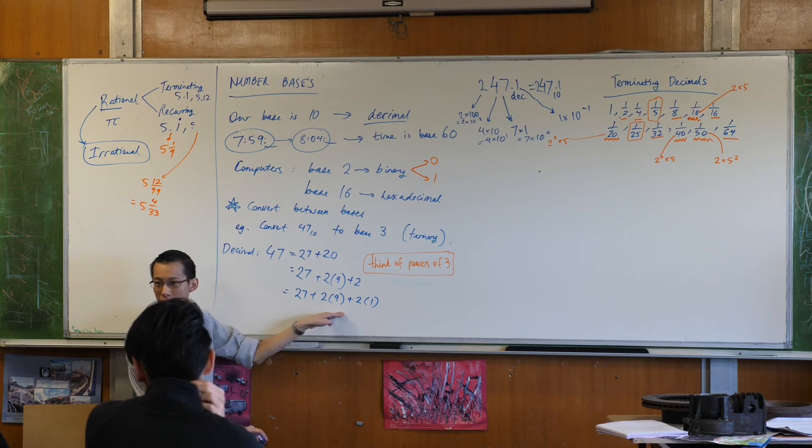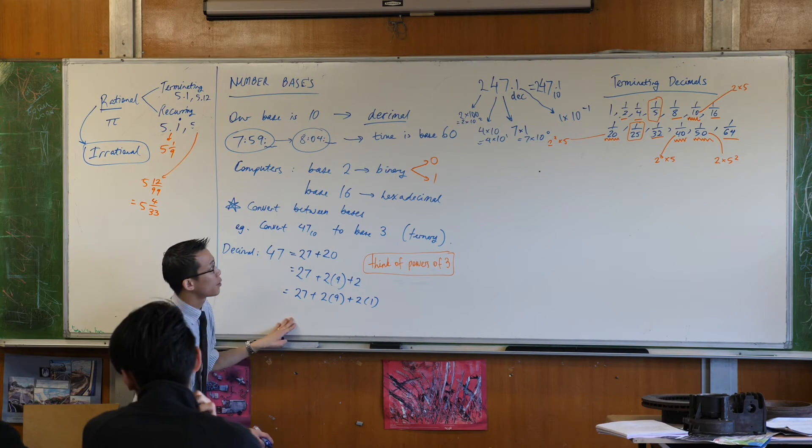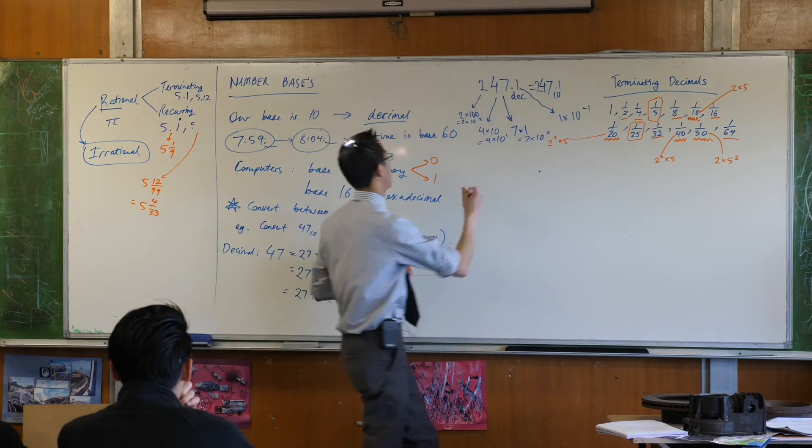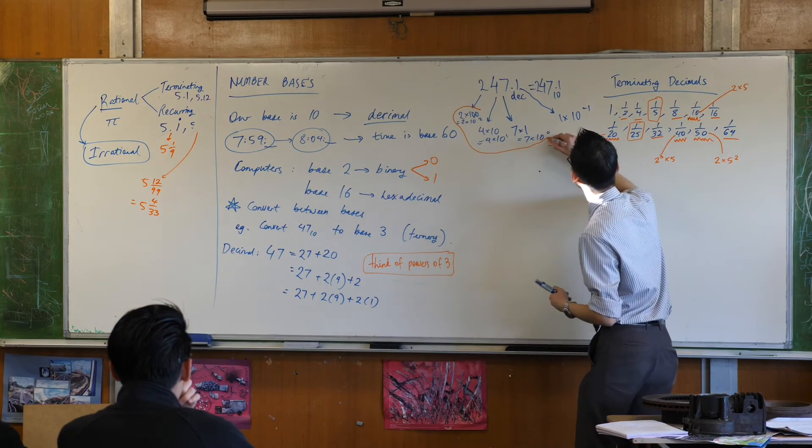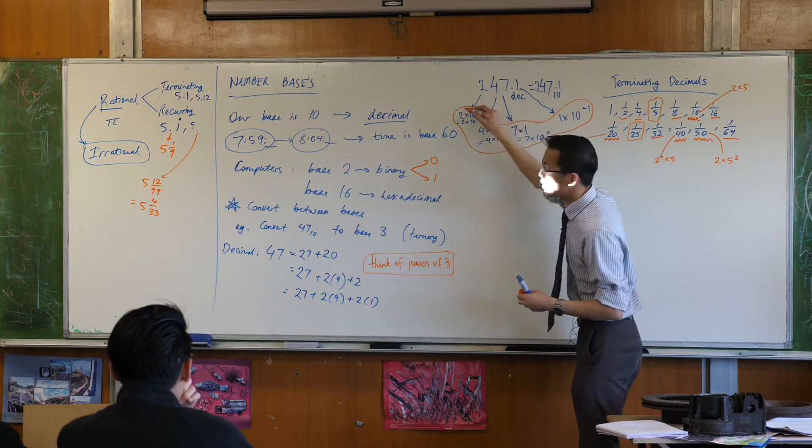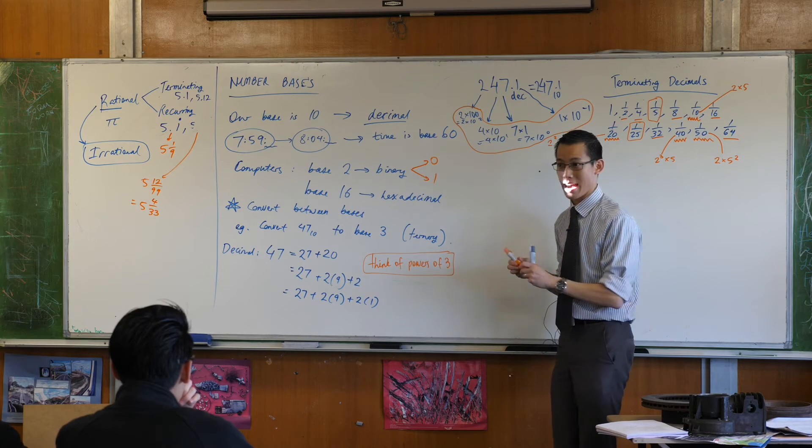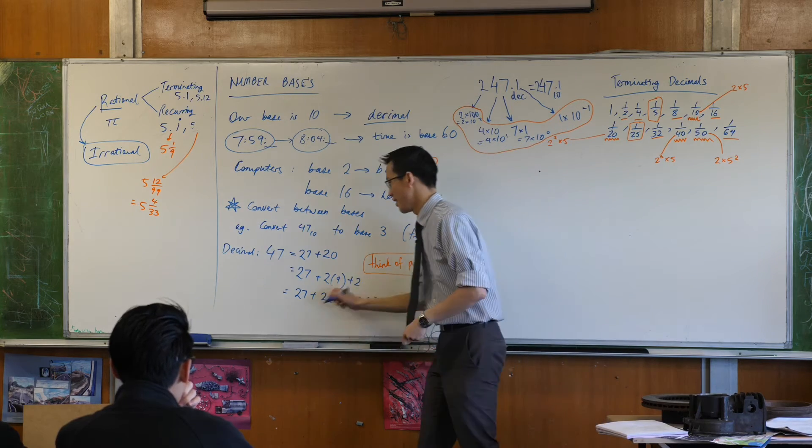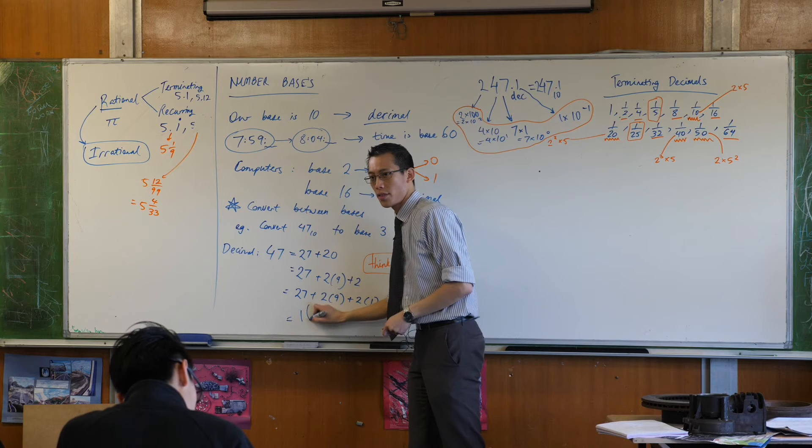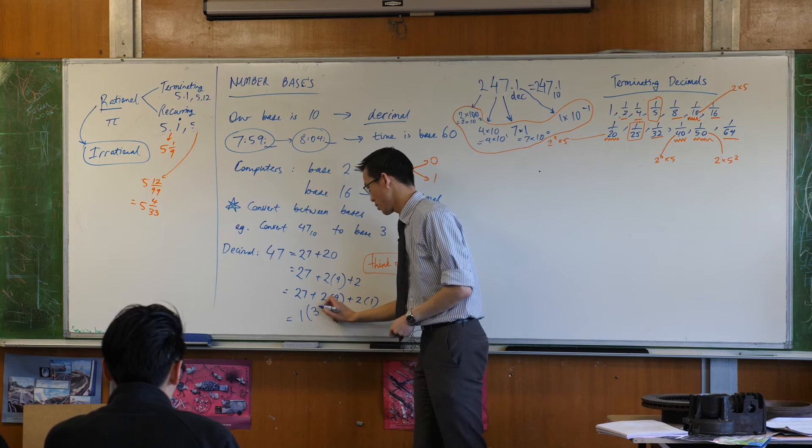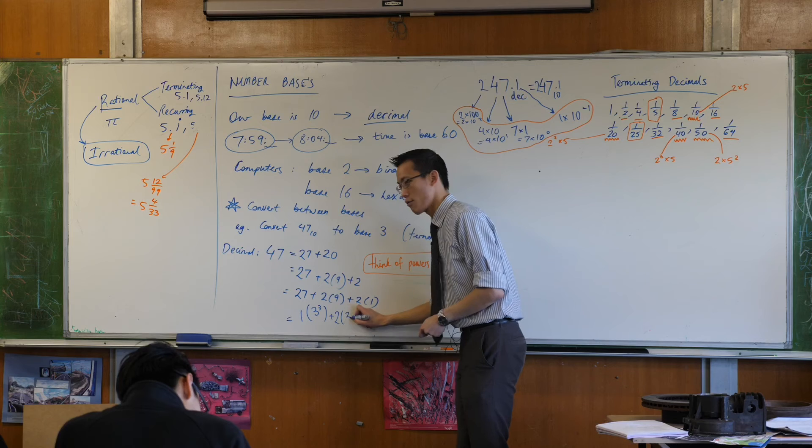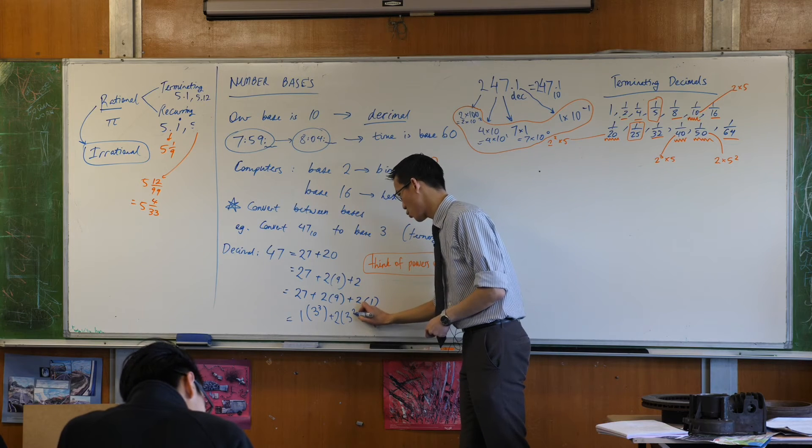So see this line here. What I'm going to do is I'm going to rewrite it in this form to make clear what powers of 3 actually appear in there. You've got 1 lot of 3³. You've got 2 lots of 3².